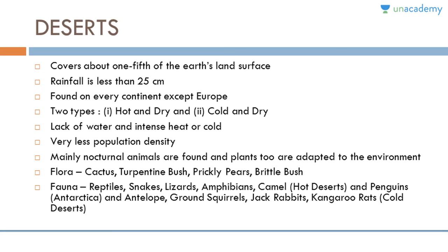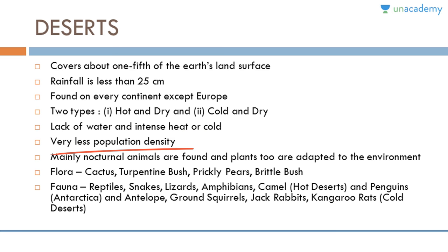The desert biome covers about one fifth of the earth's land surface with rainfall less than 25 centimeters. Deserts are found on every continent except Europe and are of two types: hot and dry, and cold and dry. There is lack of water and intense heat or cold, with very low population density. Nocturnal animals are common and plants are adapted to the environment. Plant species include cactus, turpentine bush, prickly pears, and brittle bush. Animals include reptiles, snakes, lizards, amphibians, and camels in hot deserts. Penguins are found in Antarctica; antelope, ground squirrels, jackrabbits, and kangaroo rats are found in cold deserts.